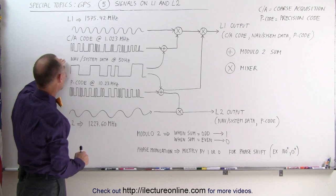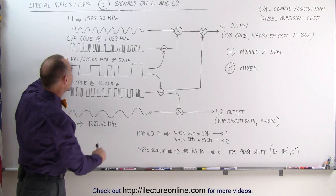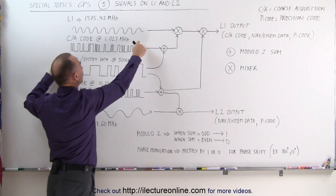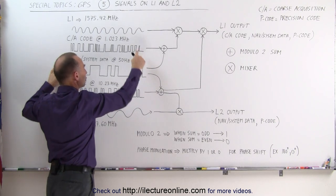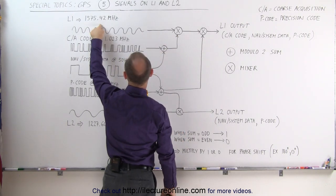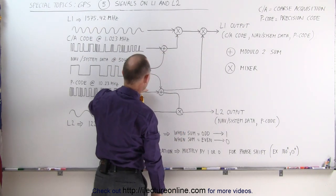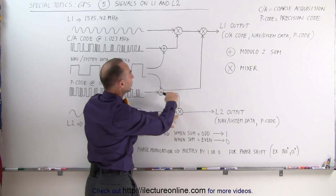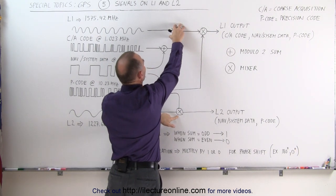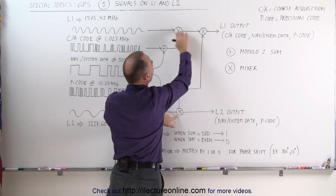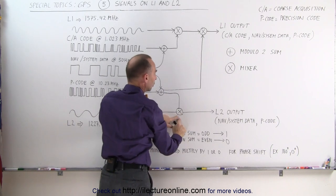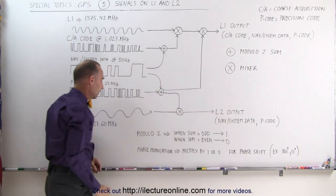So, to summarize this, what we do is, we take the nav and system data, and we add that through the modulo 2 signal to both the coarse acquisition code and the P code. The coarse acquisition code is done mixed in with the carrier signal here, and then the P code is mixed in with the carrier signal here. The P code also goes here, and it's mixed on top of the coarse acquisition code. So, both codes, the coarse acquisition and the precision code, go out on L1, and only the P code goes out on L2.